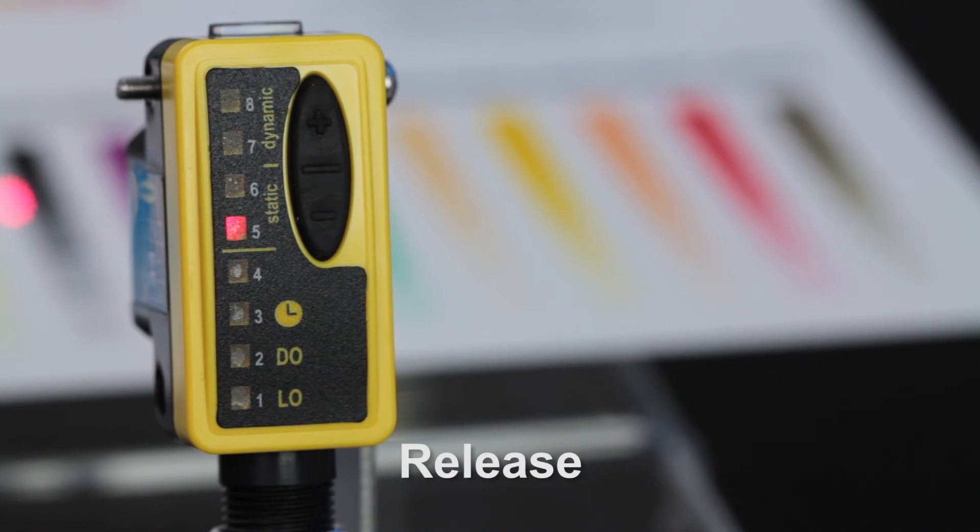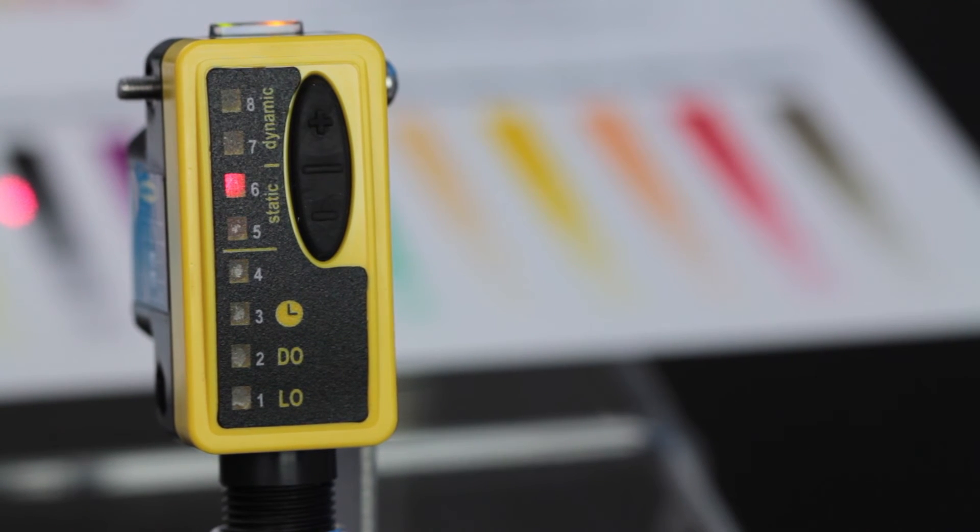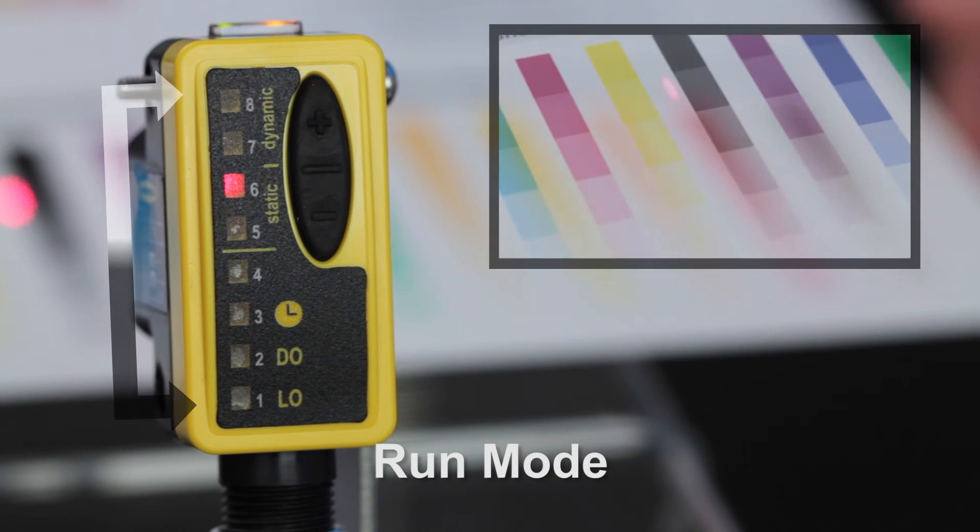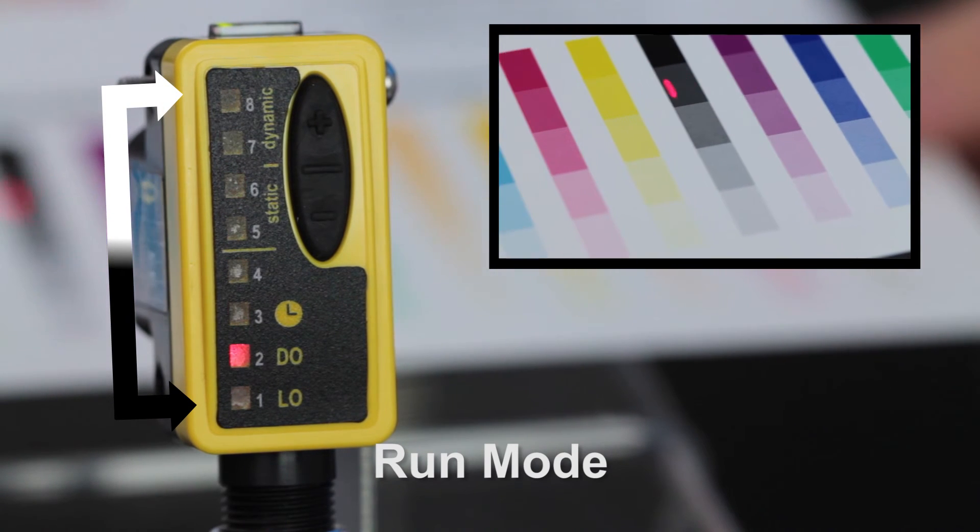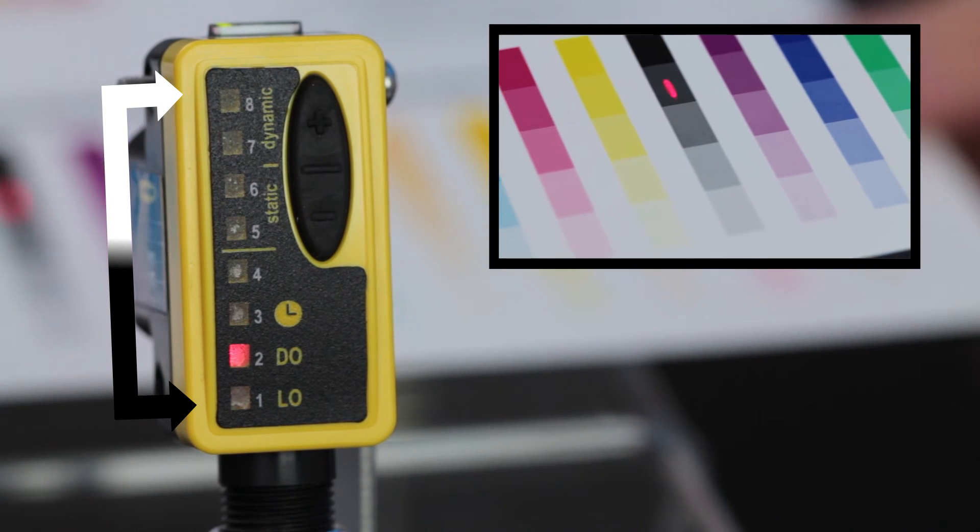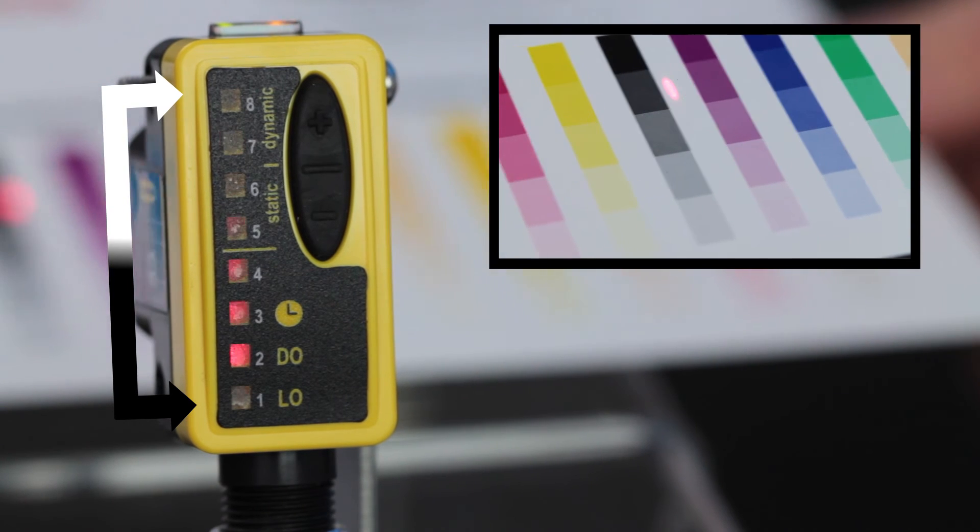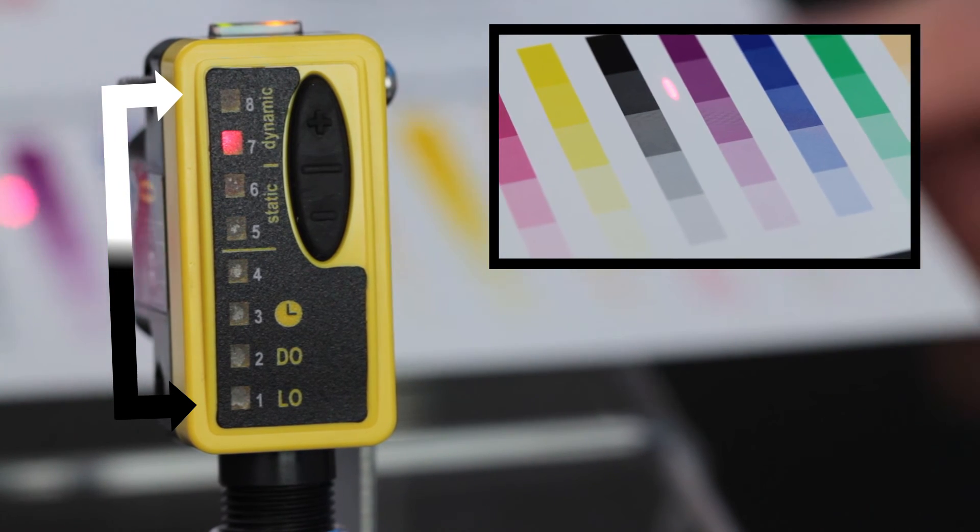Release the button after a sampling of switching conditions have been logged by the sensor. The bar graph will show the quality of the contrast between switching points on a scale of 1 to 8, with 8 being the best, then the sensor returns to run mode.